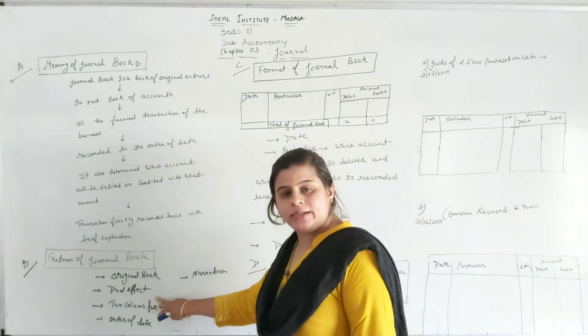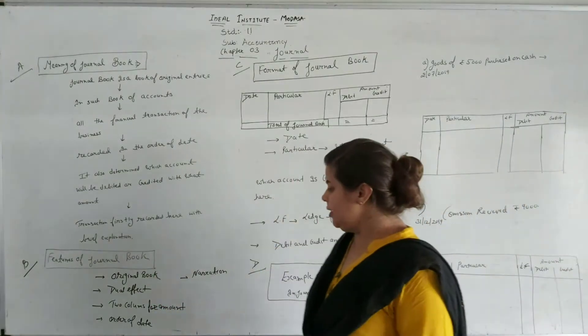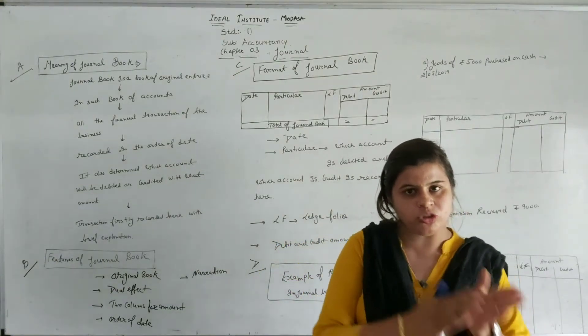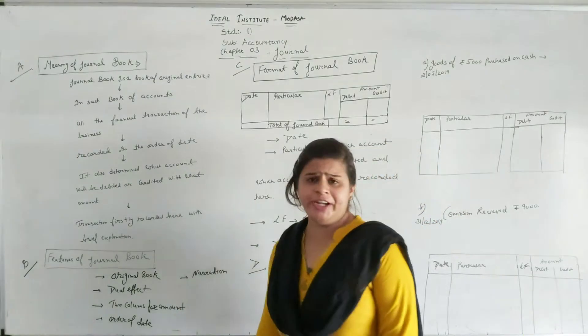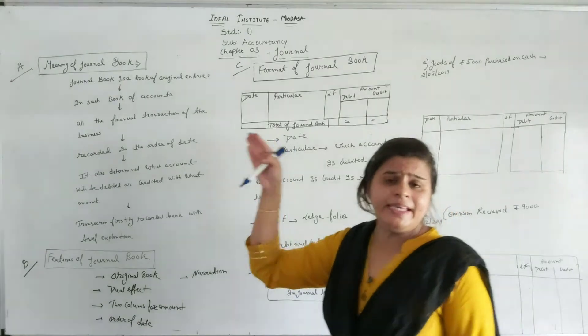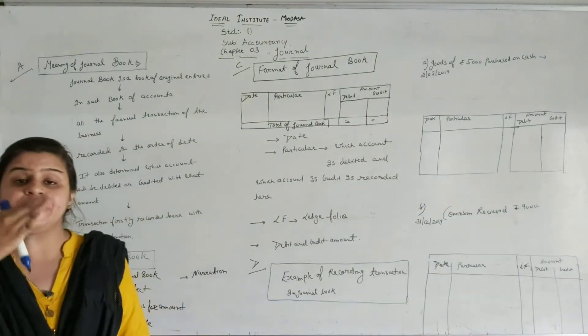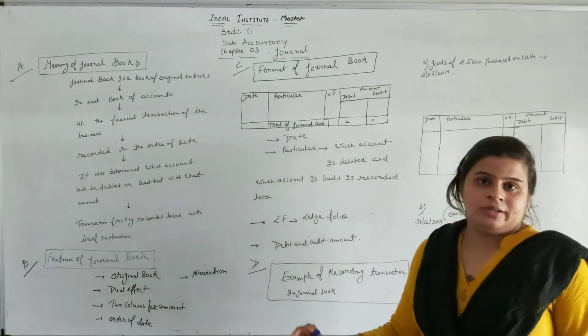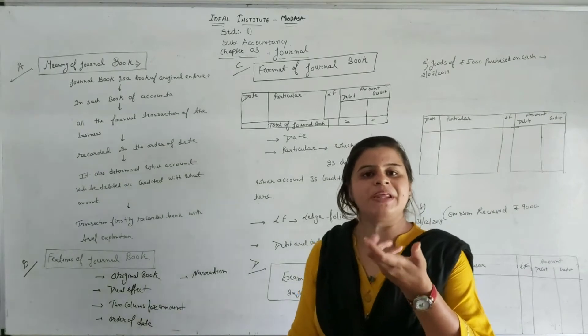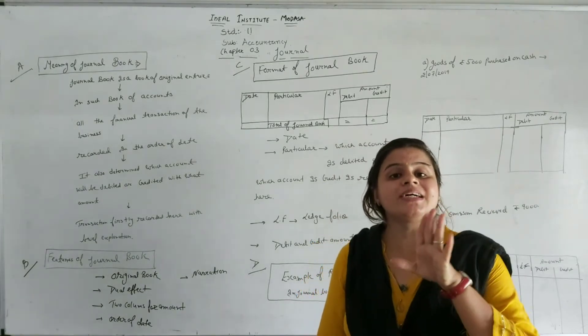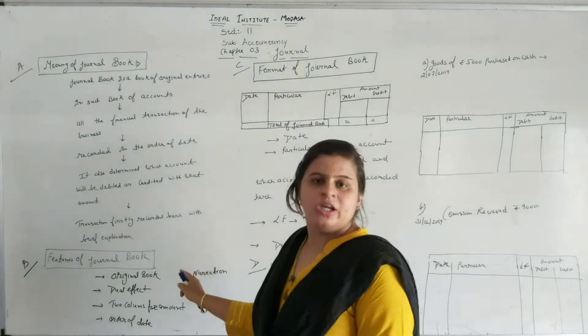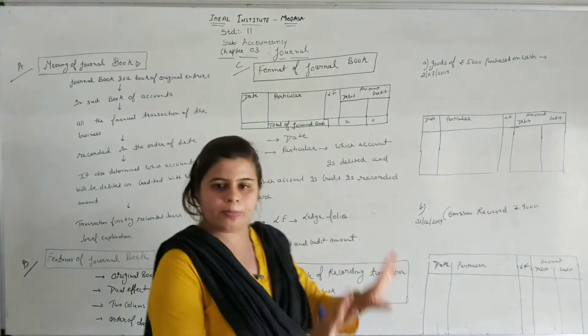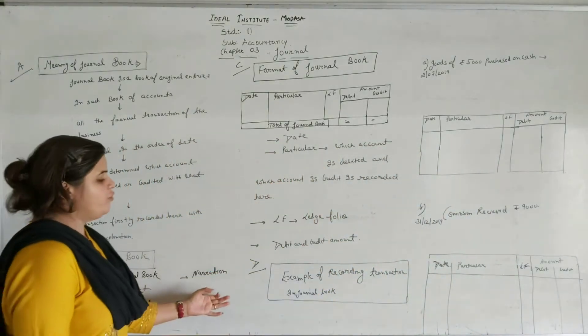Debit and credit based dual effect analysis. Two columns for amount. The debit amount and credit amount. The order of date. As we discussed right now, each and every transaction is recorded on the basis of date-wise. Date-wise is recorded. And next, narration. The narration means you can say the brief explanation of your transaction. The transaction's brief explanation is narration. If you are not able to understand what is the basic meaning of narration, when we practically do the question you will understand what is the meaning of narration.